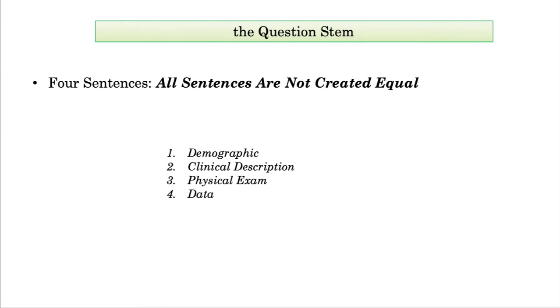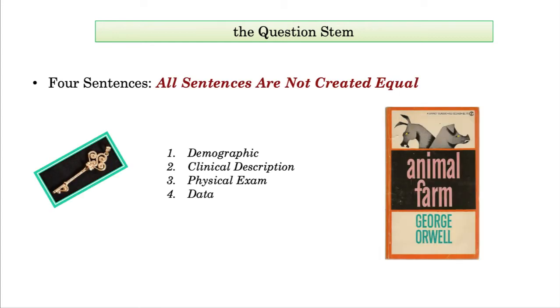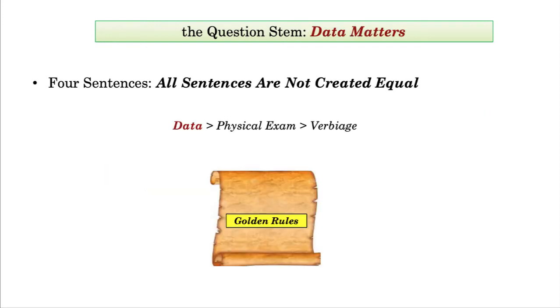Continuing with the question stem and those four sentences, it is important to note that all sentences are not created equal. I know this sounds a little Orwellian, but this is a key point and probably the most important take-home regarding the question stem and Step 1 questions in general. Of those four sentences, data trumps all else. This rule is absolute.